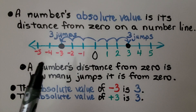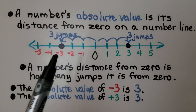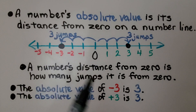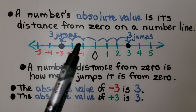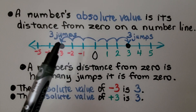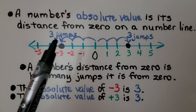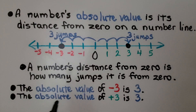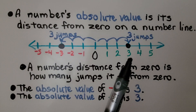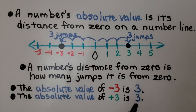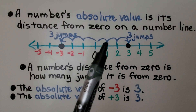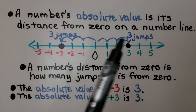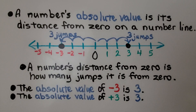The absolute value of negative three is three — it's one, two, three jumps from zero. And the absolute value of positive three is also three — one, two, three jumps from zero.